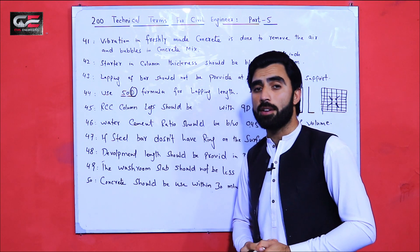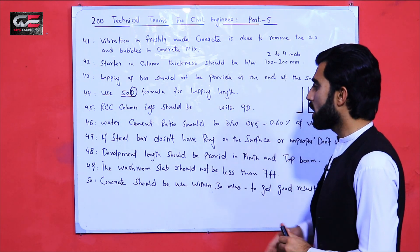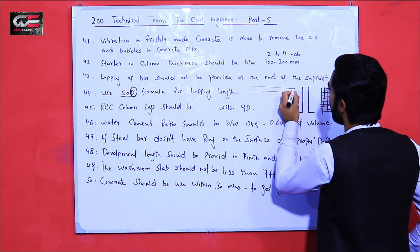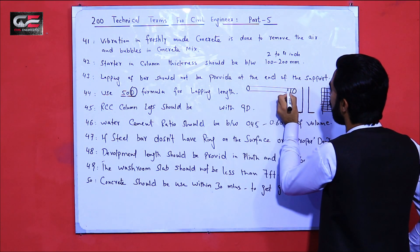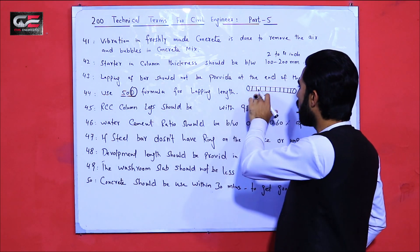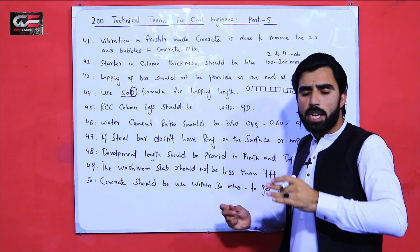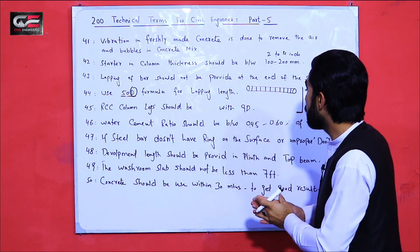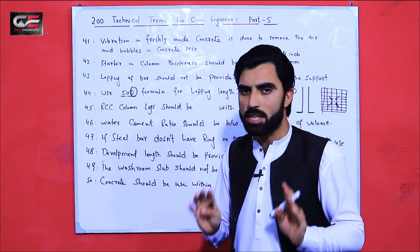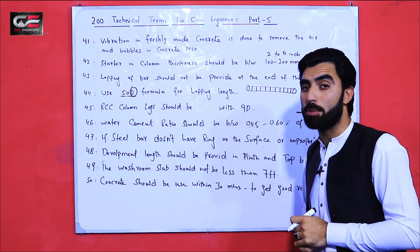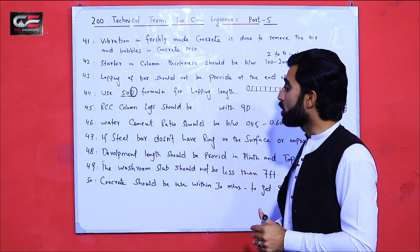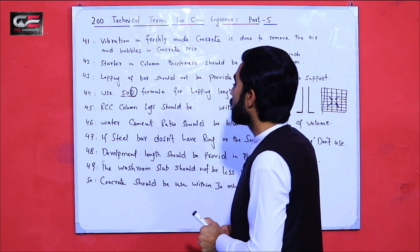Term number 47: if the steel bar doesn't have proper rings on its surface, do not use that steel for building construction. The rings — the deformations on the surface of the steel bar — create a good bond between steel and concrete. If the rings are not proper or are absent on the surface of the steel bar, it will compromise this bond. The rings should be proper and present on the surface of the steel bar.